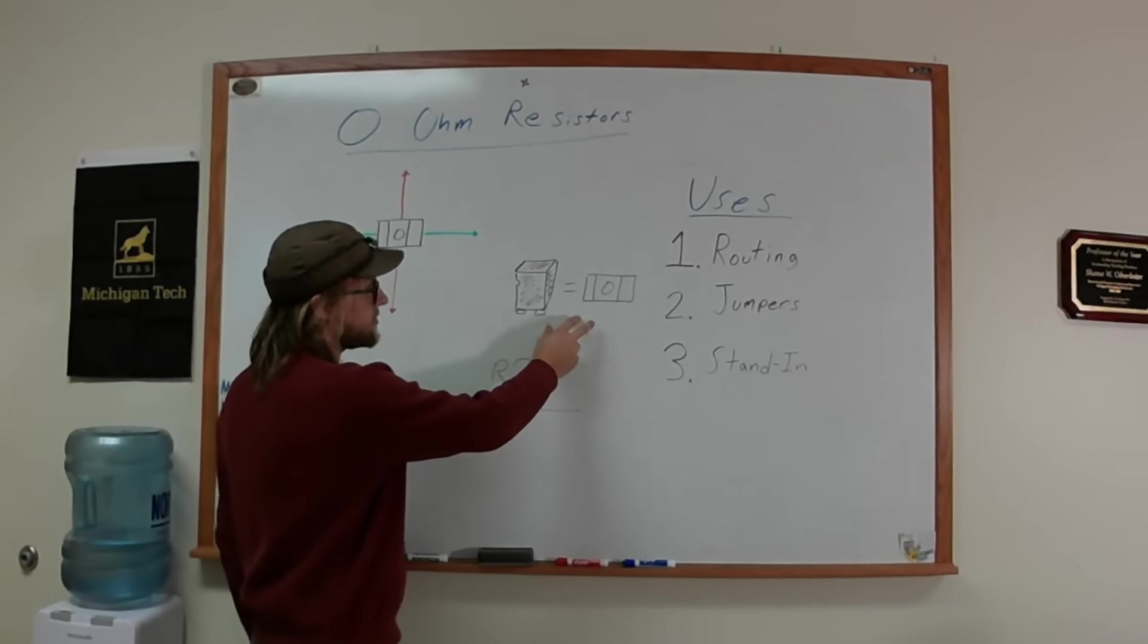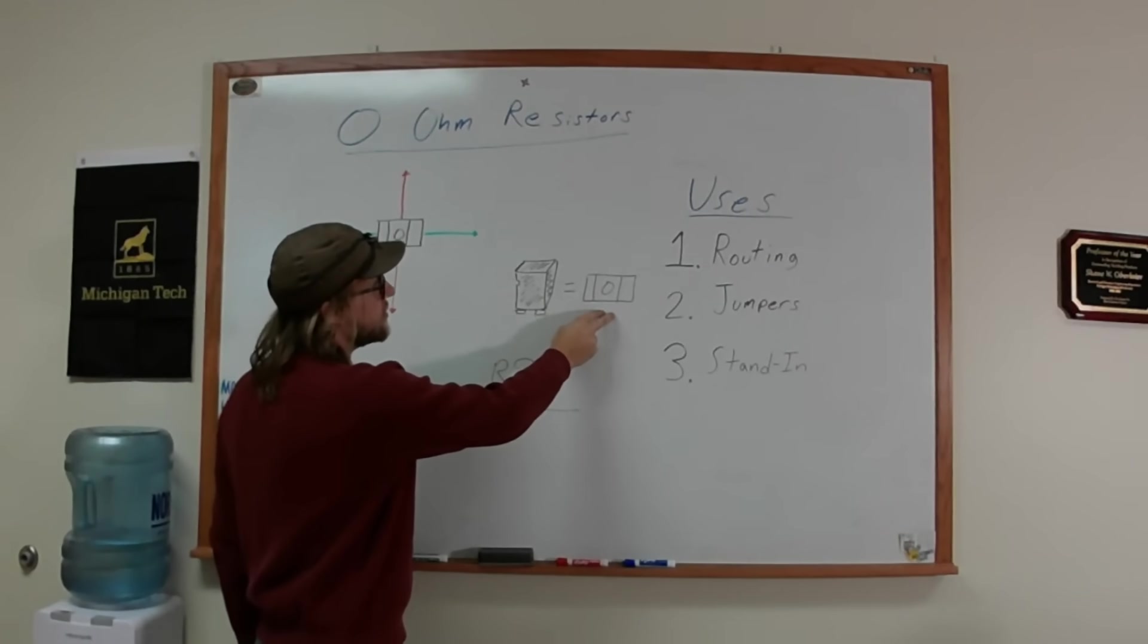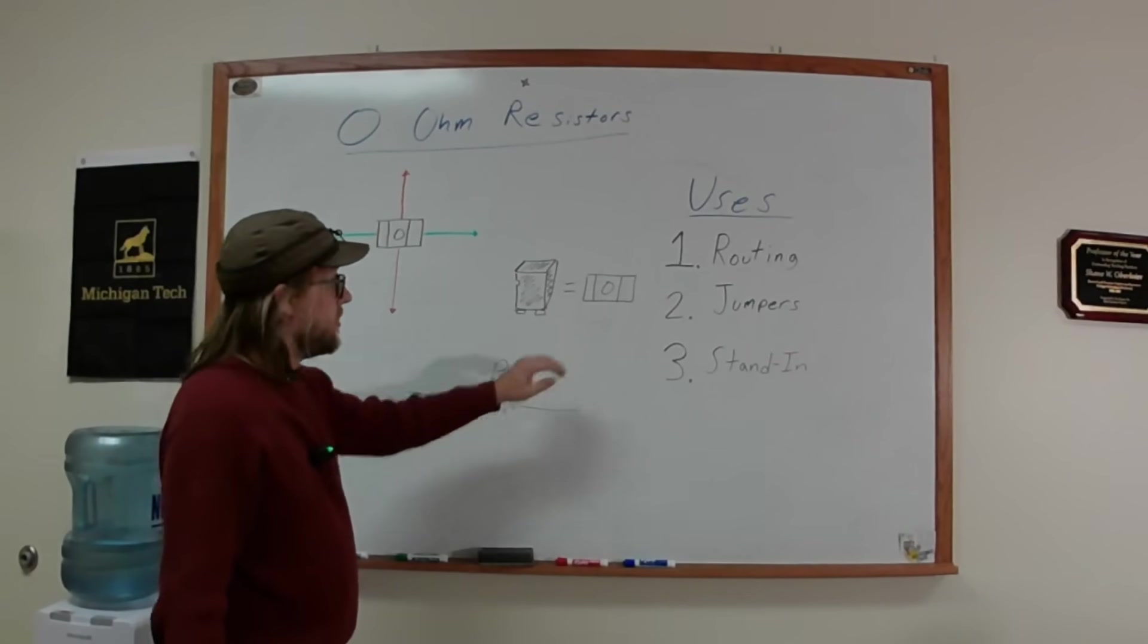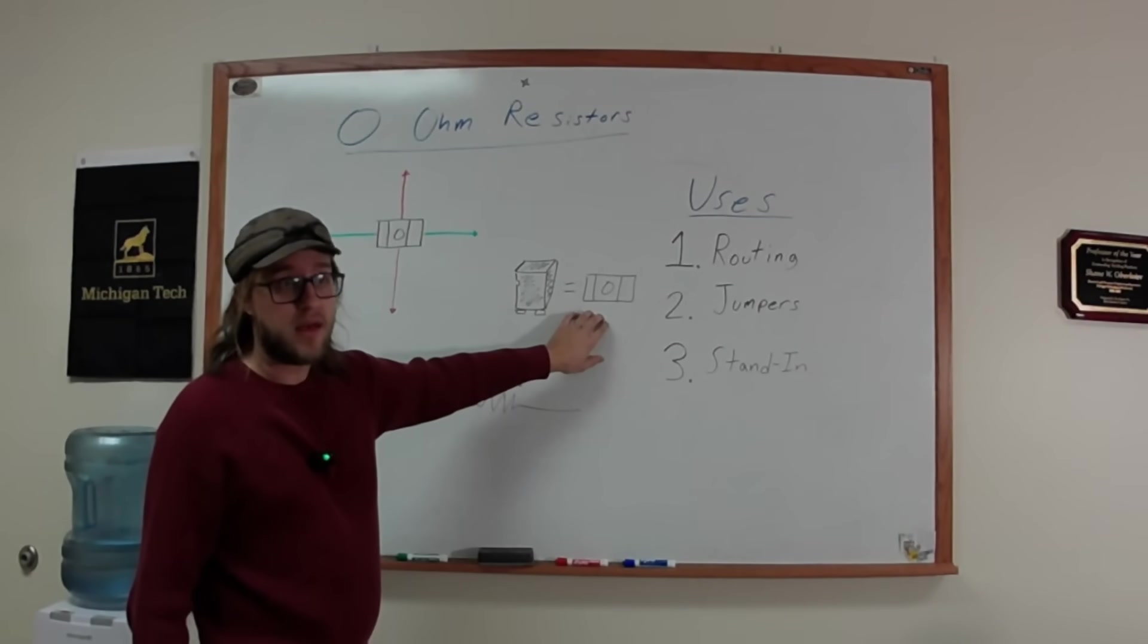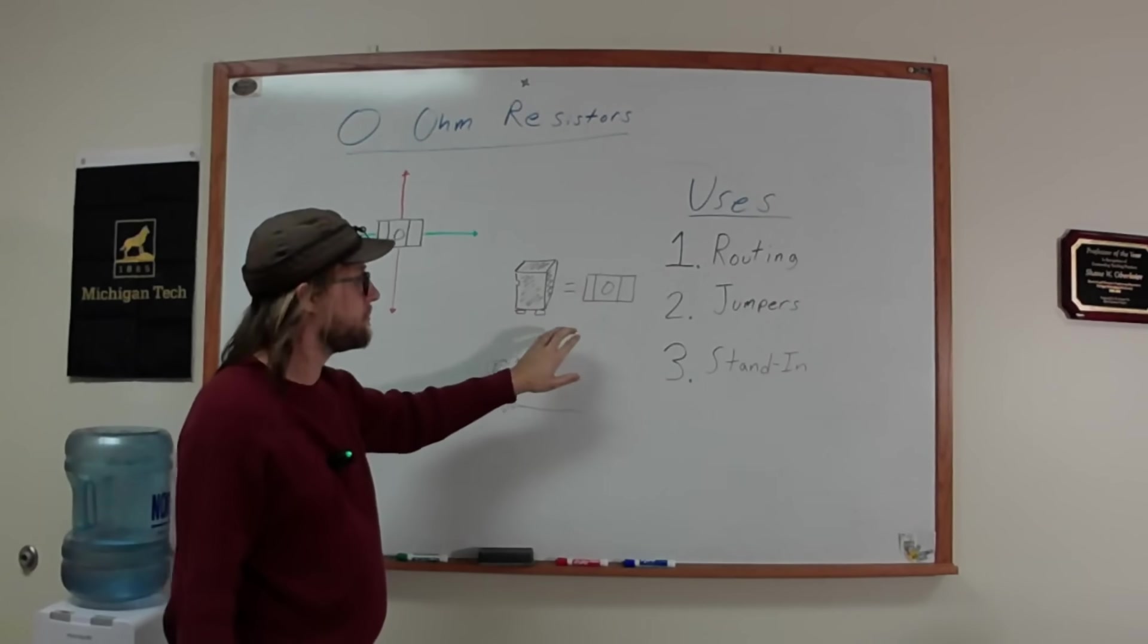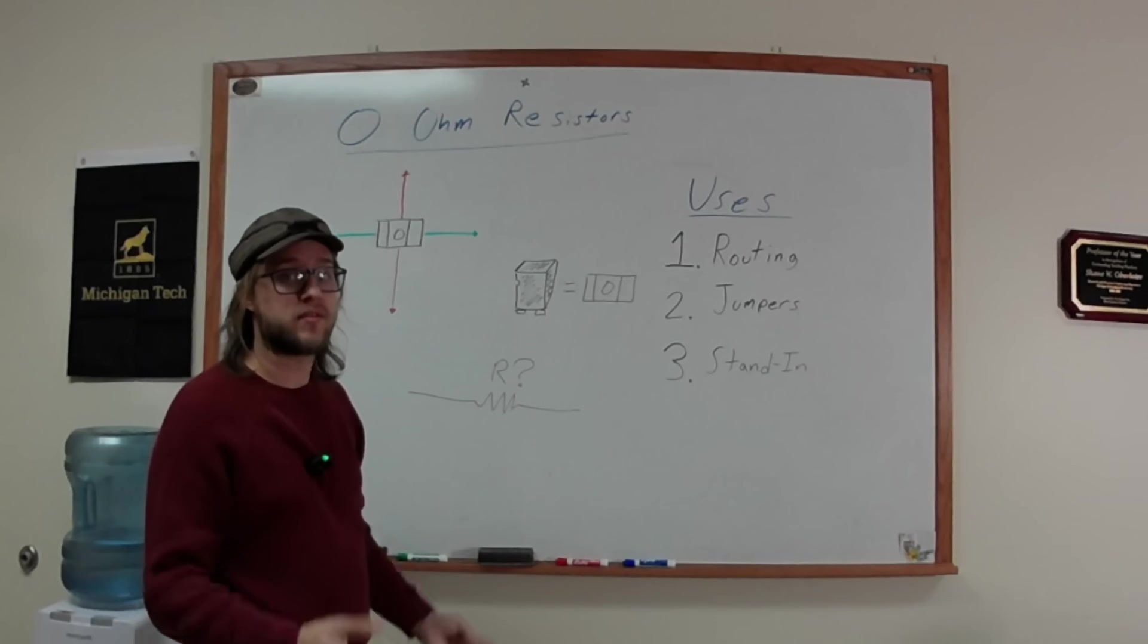And so a lot of electronics, especially development electronics, will use zero ohm resistors in place of these jumpers. They can be quite small and you have to have some intention if you want to take them off. So they can be used for configuration or completely isolating parts of circuits.